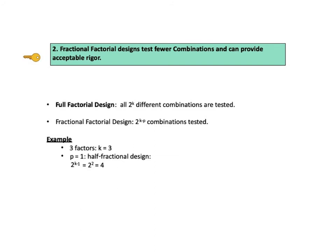KTU number 2: fractional factorial designs test fewer combinations and can provide acceptable rigor. If a full factorial design has 2 to the power of K combinations, a fractional factorial design has 2 to the power of K minus P combinations. For our simple example, let K equal 3 (three factors) and P equal 1. So we'll have 2 to the power of 3 minus 1, that is 2 to the power of 2, which is 4 runs, instead of 2 to the power of 3 which would be 8. We start with a full factorial table of coded levels for K minus 1, that is 2, of our 3 factors — we can call them A and B, or X sub 1 and X sub 2. With 2 factors, we have 4 combinations and 4 runs.